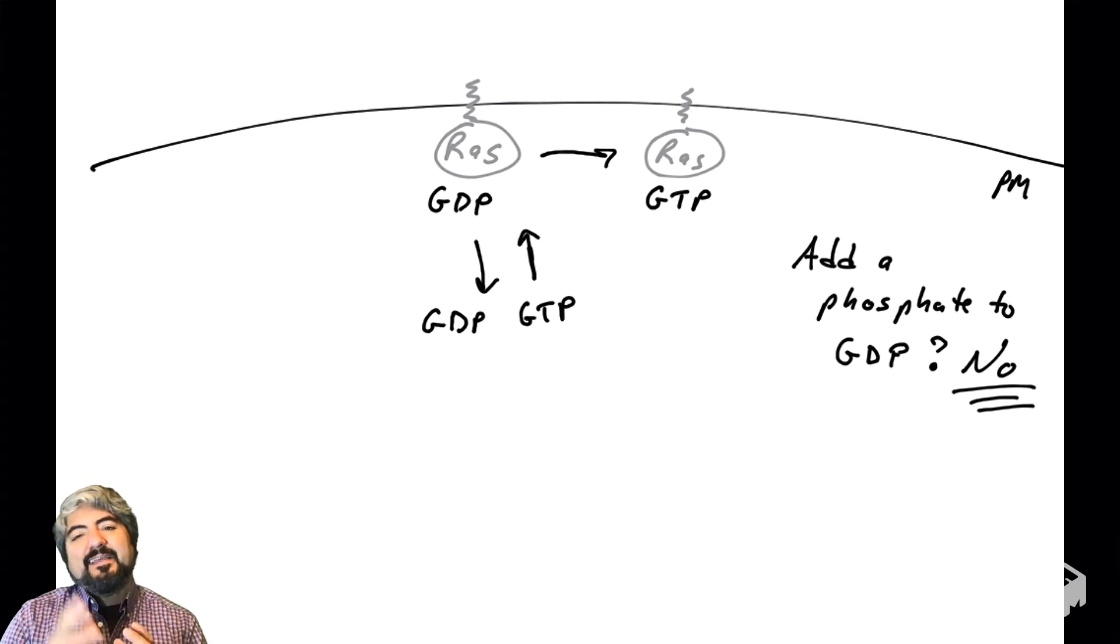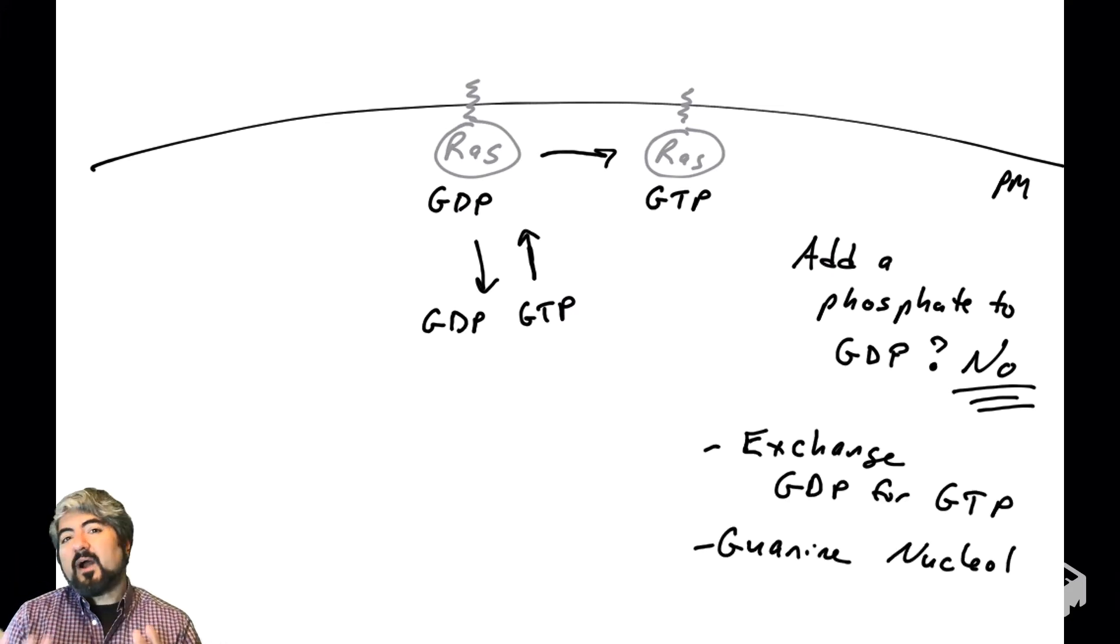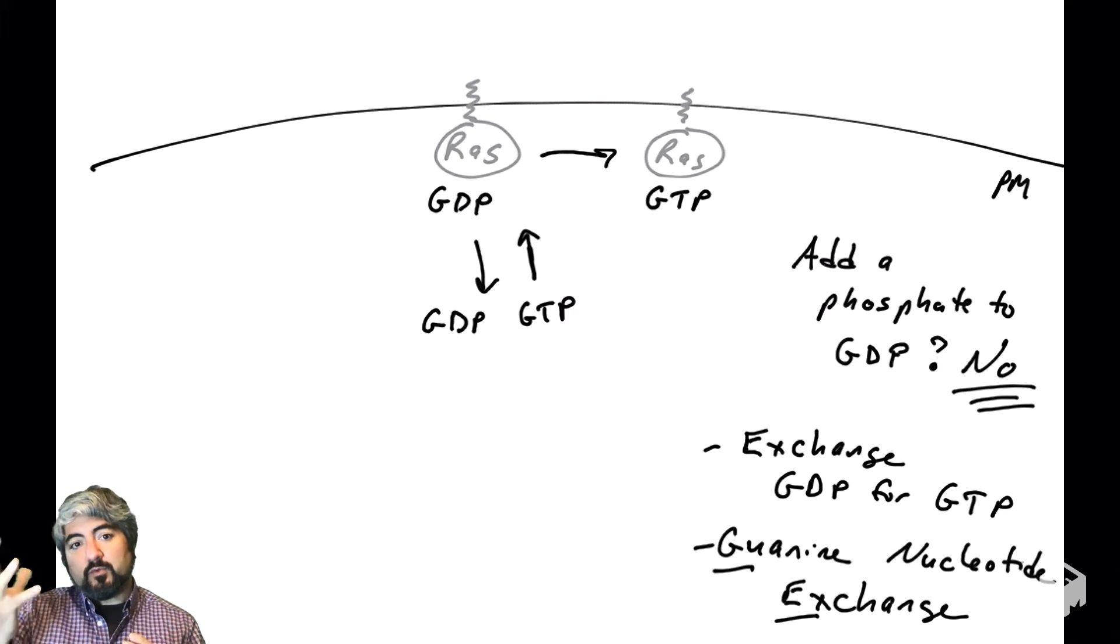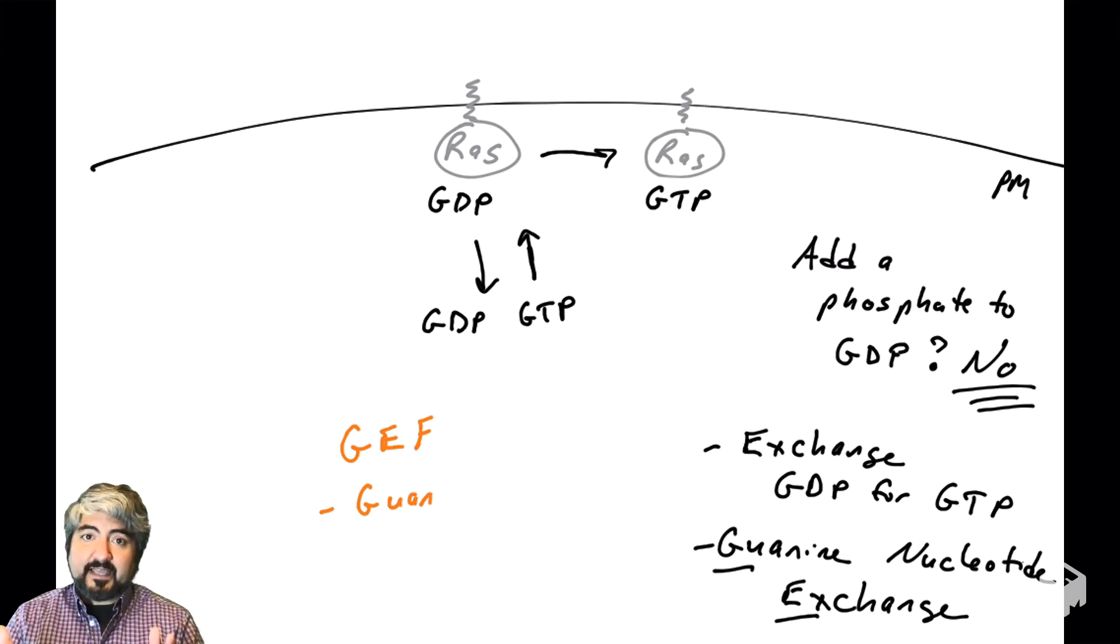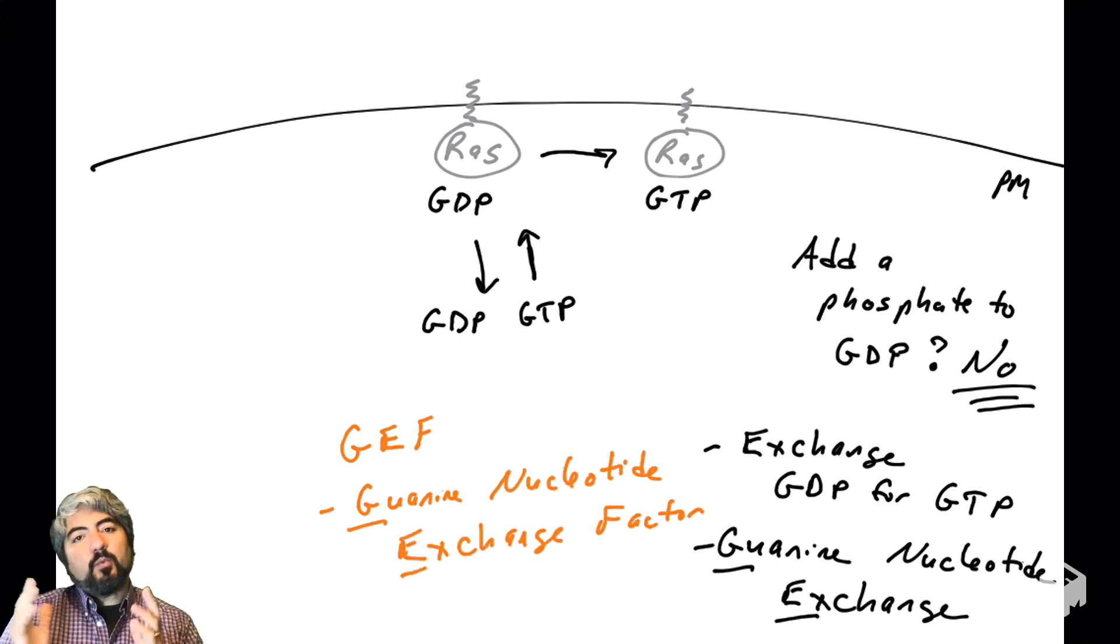What happens instead is that the GDP molecule is removed and exchanged for a completely different nucleotide, a GTP. Instead of adding just a phosphate, the whole GDP comes out and a new GTP goes in. This is called guanine exchange. This process is known as guanine nucleotide exchange, and it is facilitated by a protein called a guanine nucleotide exchange factor, commonly referred to as a GEF. There are many proteins in human cells that can act as a GEF to swap out GDP for GTP.